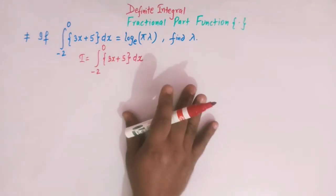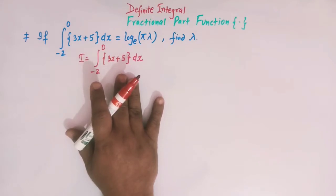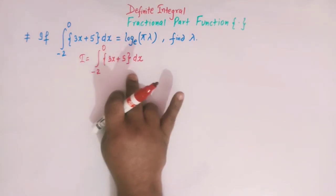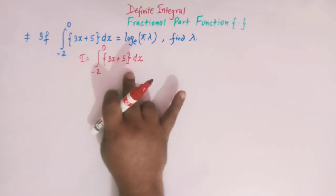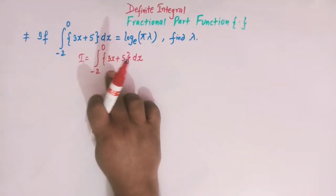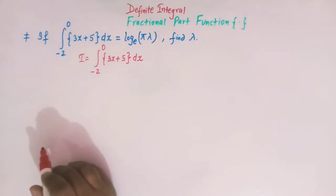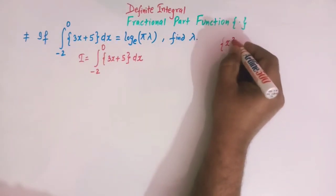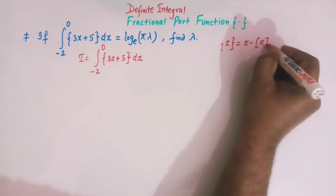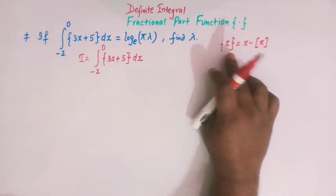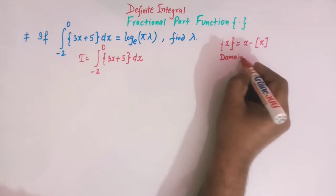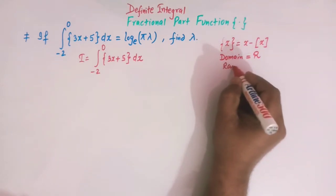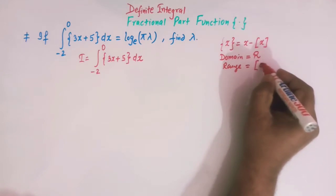A lot of concepts will be used to find the value of this integral, including the periodicity of the fractional part function. We will see in later steps how we can use this periodicity. First, let us quickly recall the definition: the fractional part of x is defined as x minus the greatest integer of x. The domain of the fractional part function is the set of real numbers and the range is the interval [0, 1).